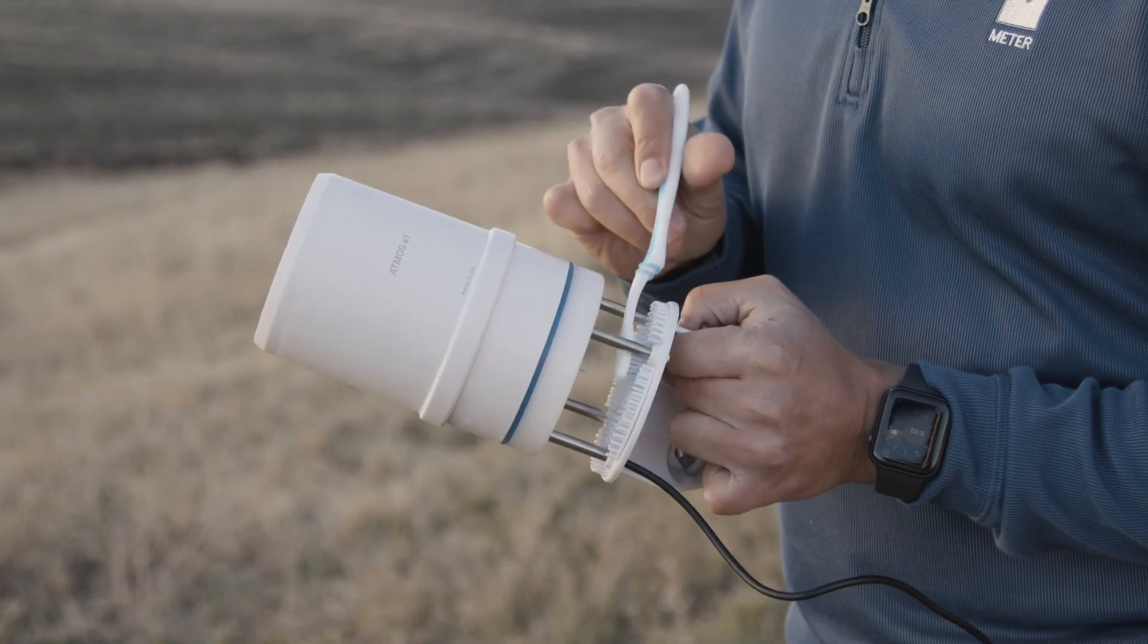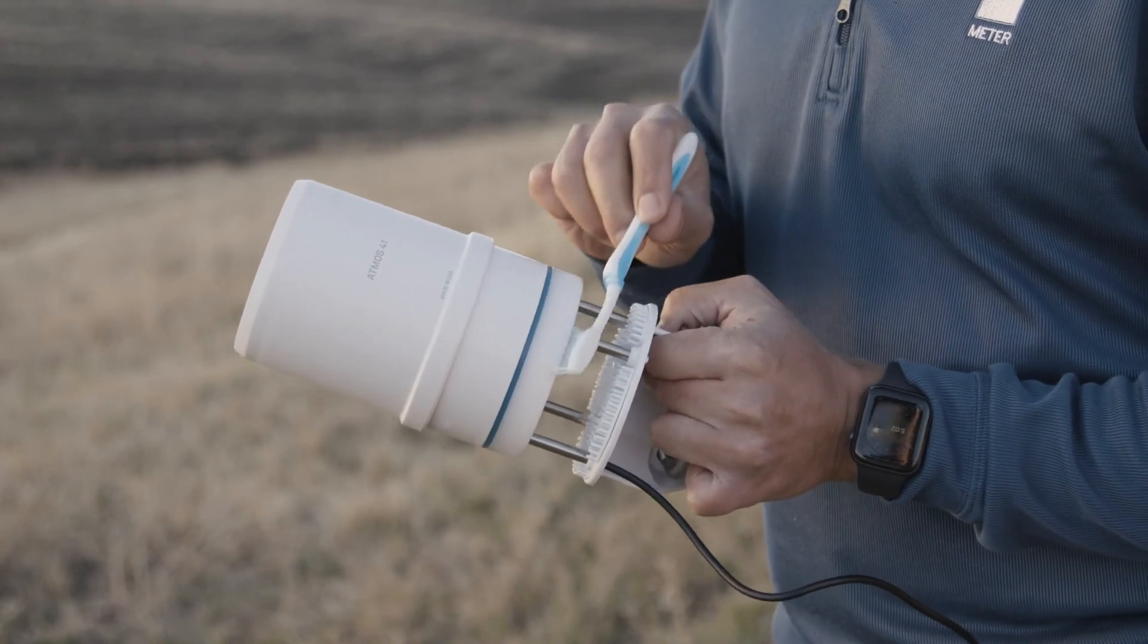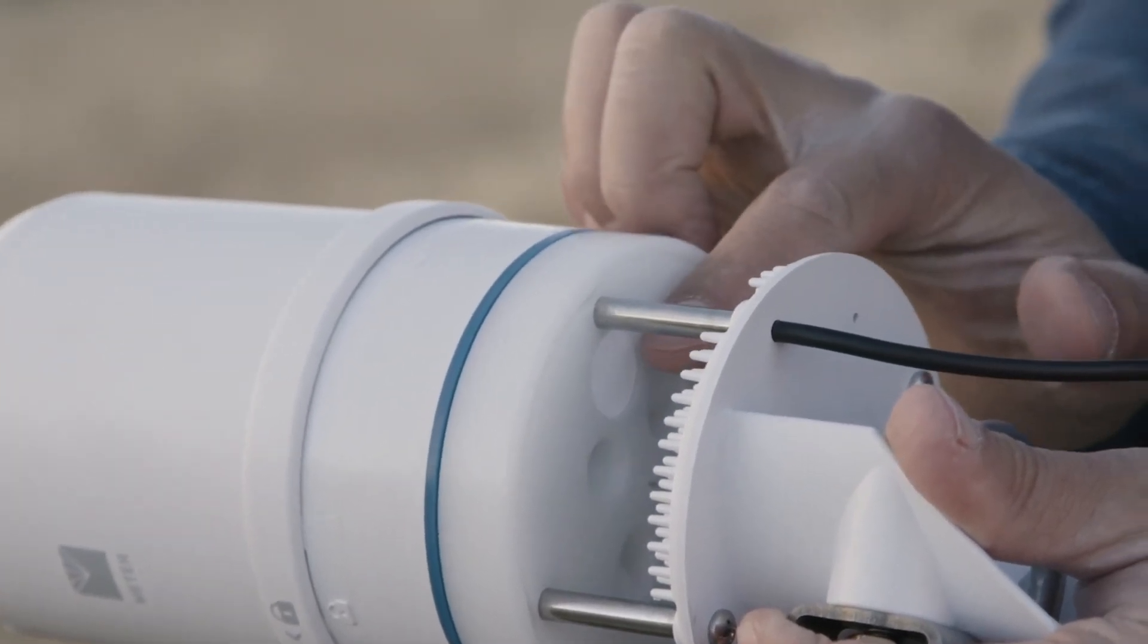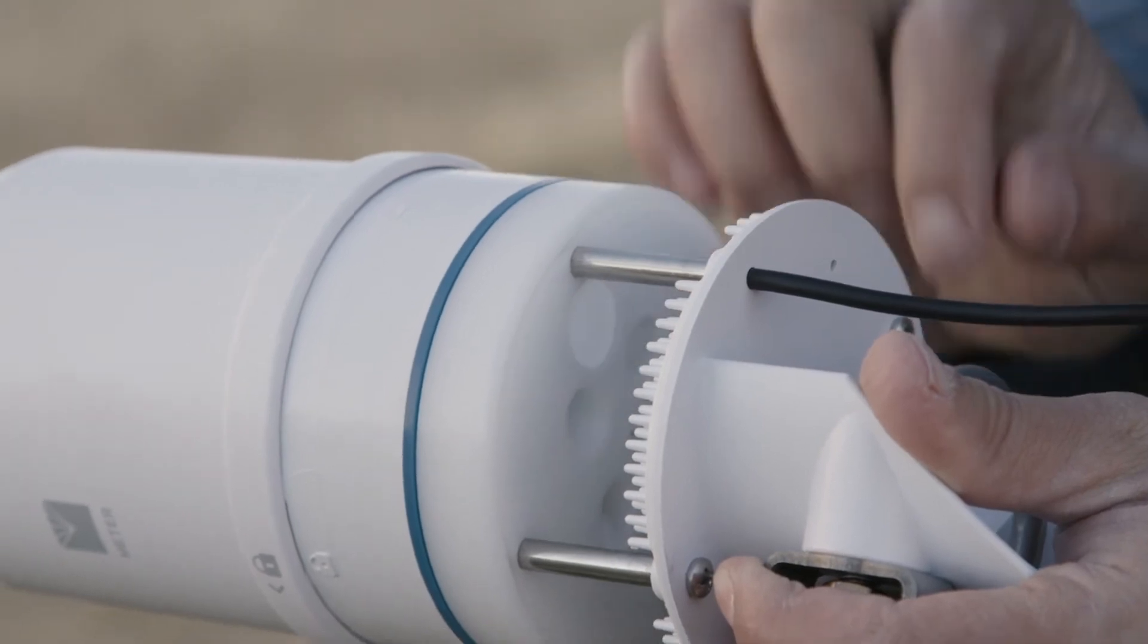It's not necessary to brush between ridges in the splash guard. Observe the Teflon screen to see if it's dirty. If it's dirty, it's best to replace it. Contact Meter for a replacement.